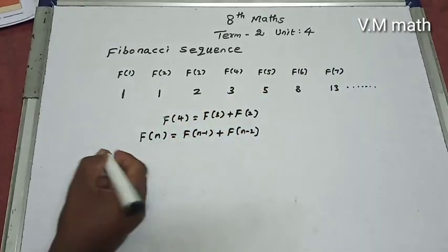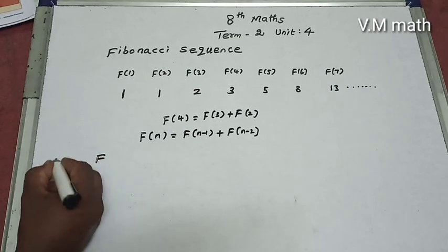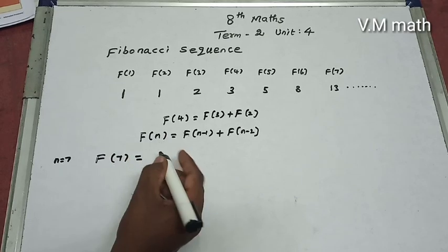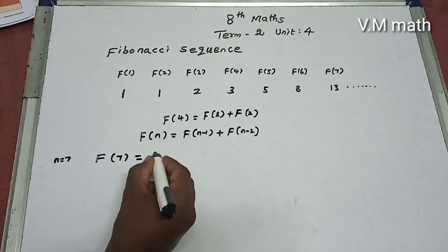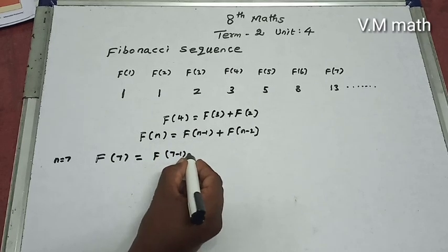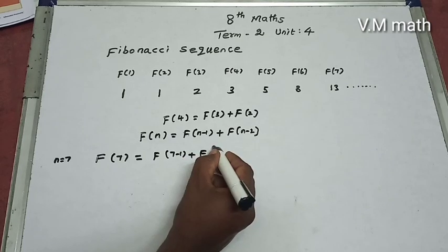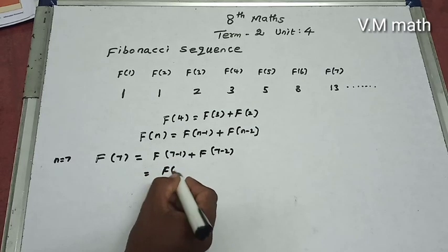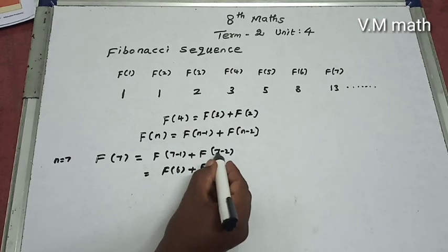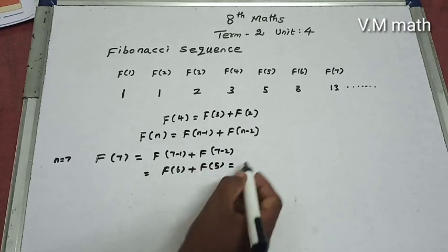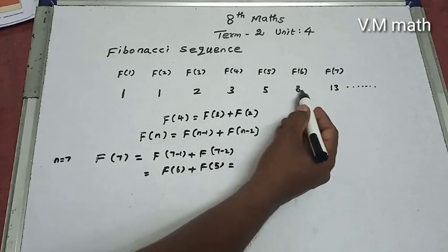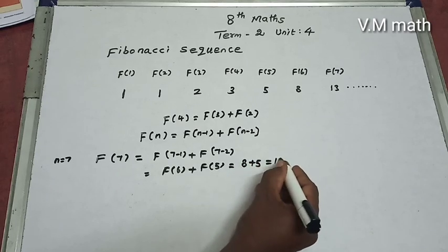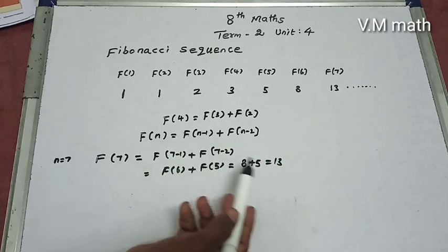To find the 7th term, set n = 7. Then f(7) = f(7-1) + f(7-2) = f(6) + f(5). f(6) is 8 and f(5) is 5, so 8 + 5 = 13. Therefore f(7) = 13.